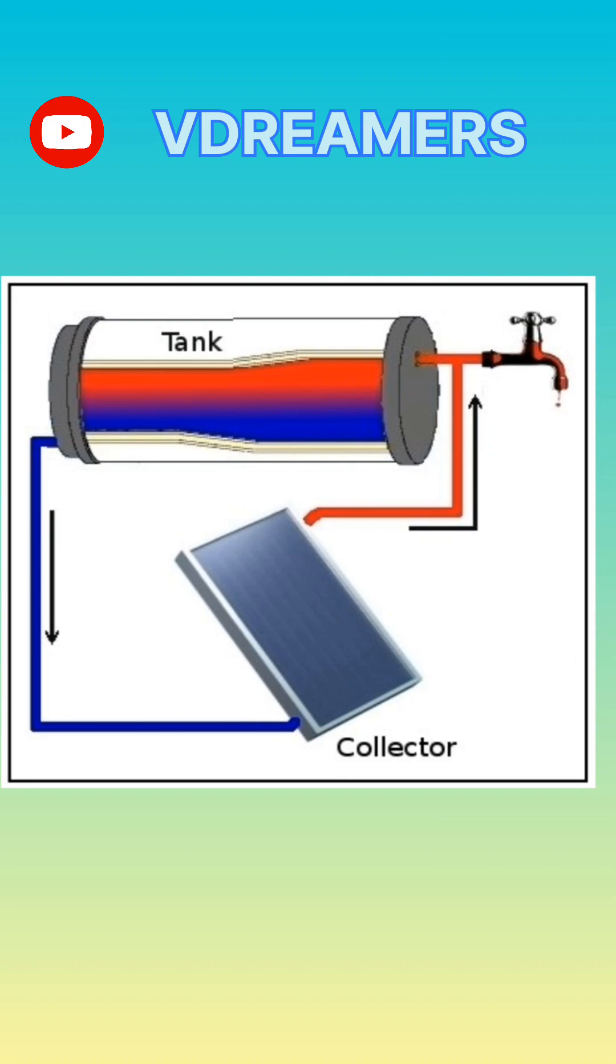There are two types of solar water heaters: one, active systems use pumps to circulate water. Two, passive systems rely on natural convection.